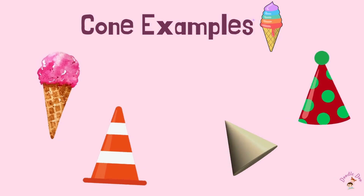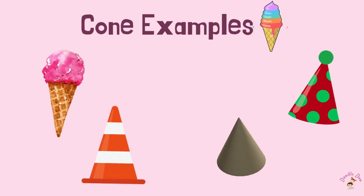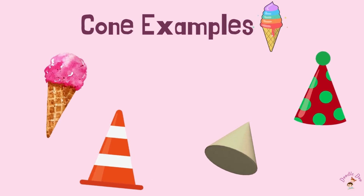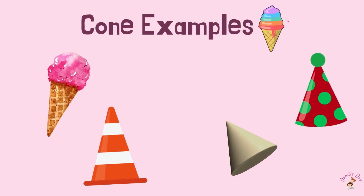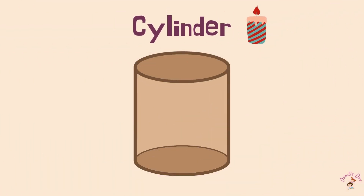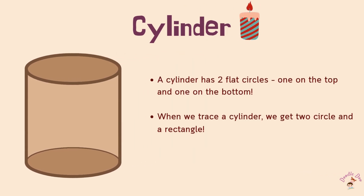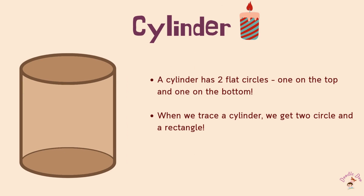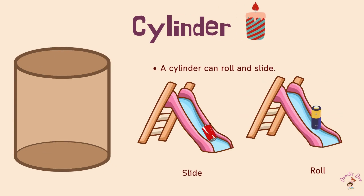Examples of cones: Ice Cream, Traffic Cone, Birthday Cap, Party Hat. Cylinder. Cylinder has two flat circles, one on the top, one on the bottom. When we trace a cylinder, we get two circles and one rectangle. A cylinder can roll and slide.